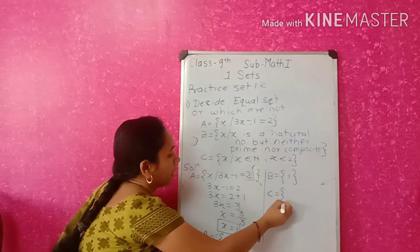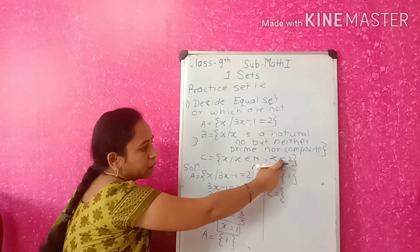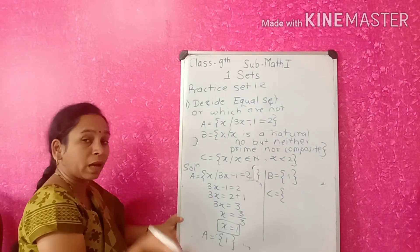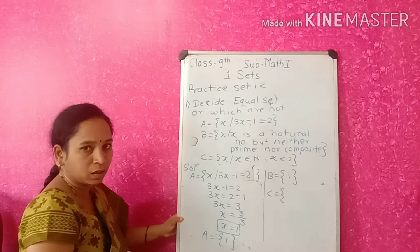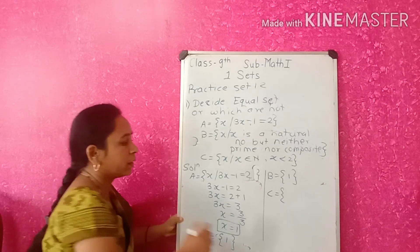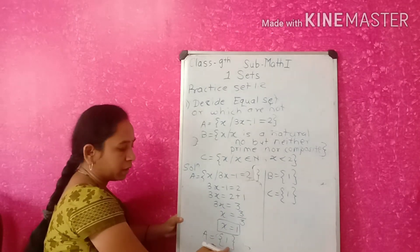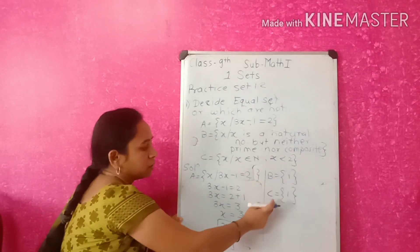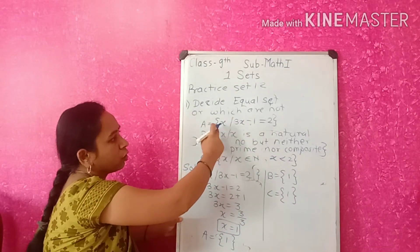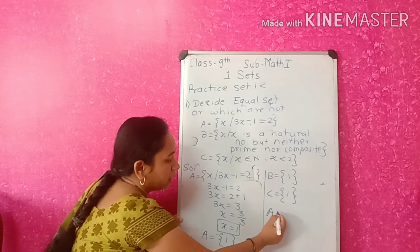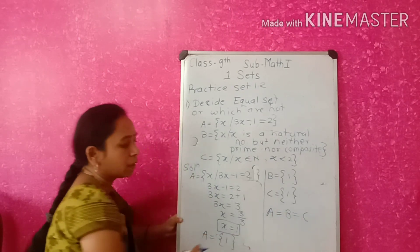For set C, x is a natural number less than 2. Natural numbers start from 1, so the only value less than 2 is 1. If we observe: A's element is 1, B's element is 1, and C's element is 1. Therefore A equals B equals C — all three sets are equal.